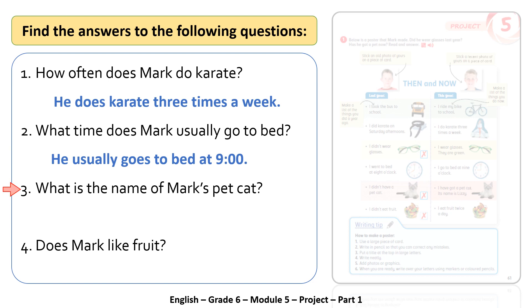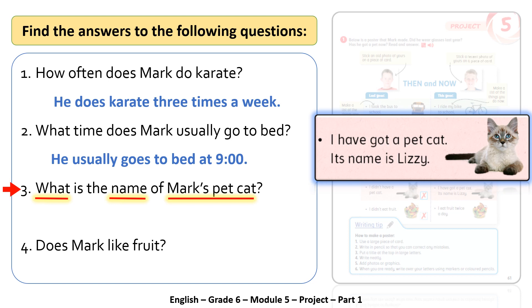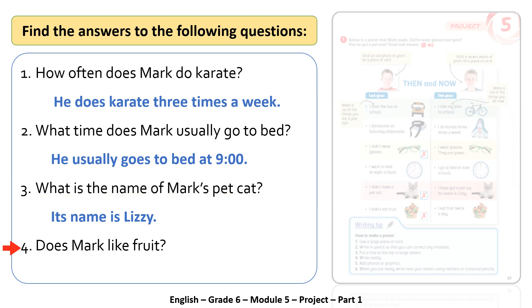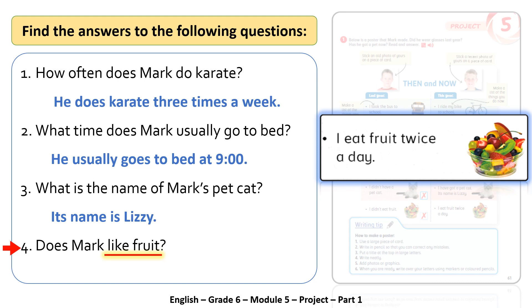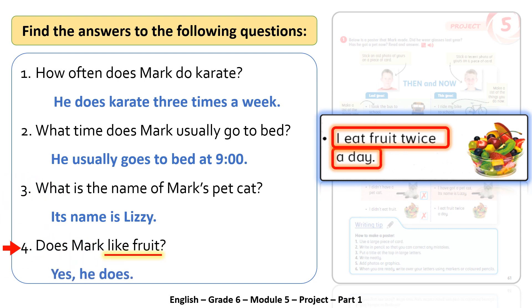Question three: what is the name of Mark's pet cat? We find in the poster: 'I've got a pet cat, its name is Lizzie.' So the answer is: its name is Lizzie. Question four: does Mark like fruit? Searching for fruit in the poster: 'I eat fruit twice a day.' So the answer is yes, he does — he likes fruit.